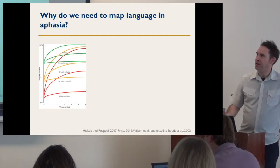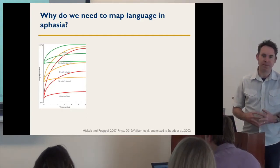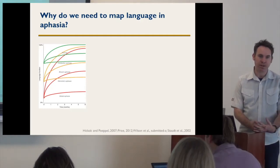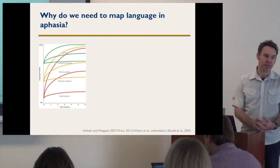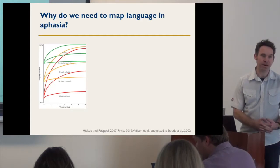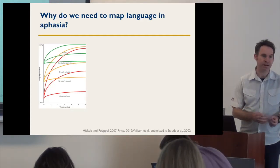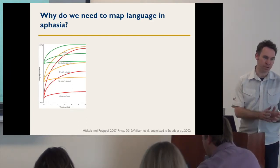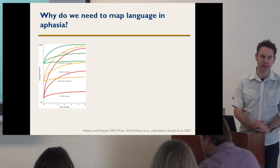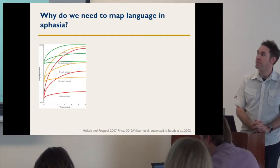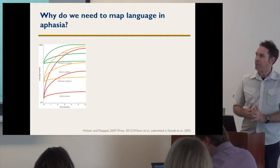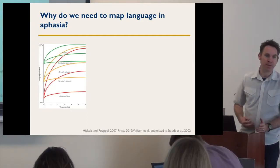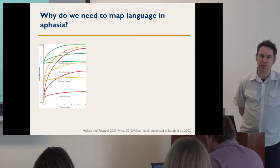So what is language mapping, and why do we need to do it in aphasia? By language mapping, I mean using functional imaging to identify brain regions that are involved in language processing. This is done routinely in clinical contexts — anytime you want to do surgery anywhere near a possible language area, people use fMRI clinically to identify which regions are critical for language and try to minimize resection of those areas. In aphasia, I'm very interested, as I know many of the people in this room are, in functional plasticity.